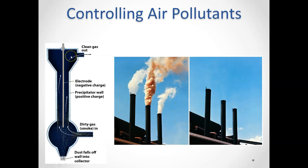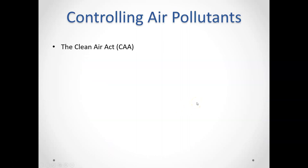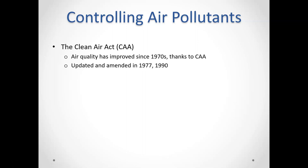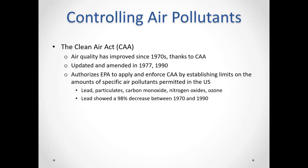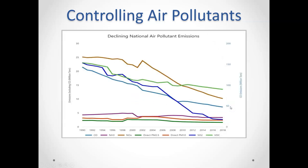An electrostatic precipitator works by using positive and negative ions to ionize smoke particles so they fall out due to electricity — the difference before and after is dramatic. Thankfully, here in the United States we have the Clean Air Act, enacted in the 1970s, which set standards and limits on air pollutants from every major source. Since the Clean Air Act was enacted, we've seen decreases in lead particulates, carbon monoxide, nitrogen oxides, ozone, and more. The Clean Air Act really works and has dramatically reduced pollutants in the United States.